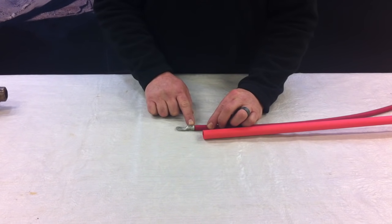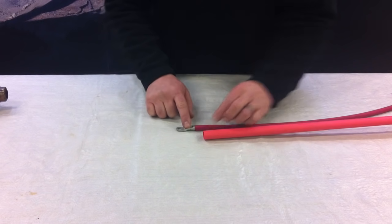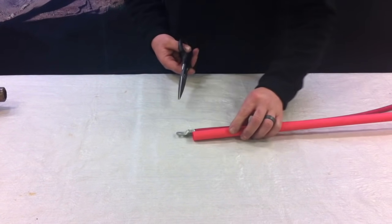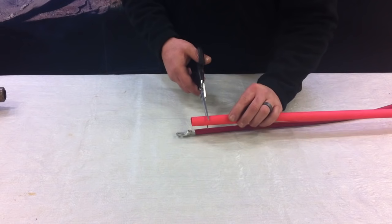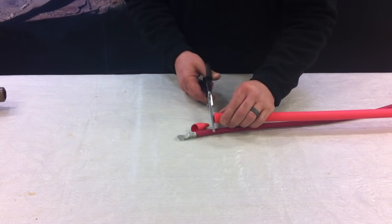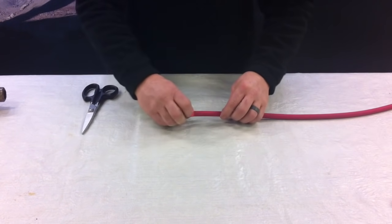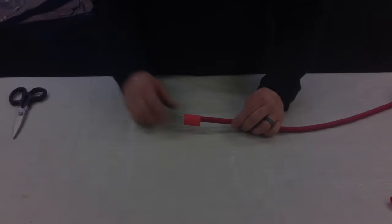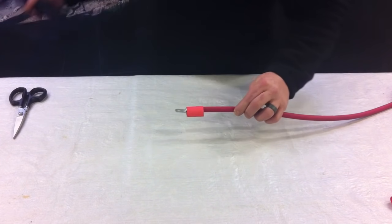Now that we've got our lug crimped onto our cable we're going to go ahead and shrink tube it. So basically what we're going to do is we're going to take and we're going to measure where we want our shrink tube and we're going to cut it accordingly. Place it on and we're going to go ahead and shrink it up.